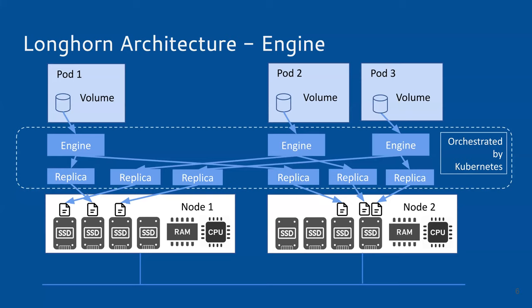On a given node there will be one pod containing the engines and another pod containing the replicas. Inside those pods, replicas are still independent separate processes and engines are also separated. That's how we're going to solve the problem of exhausting pod count on a node.